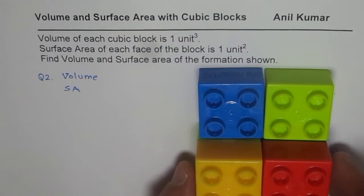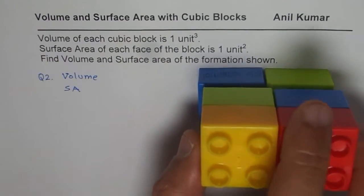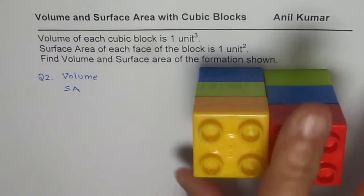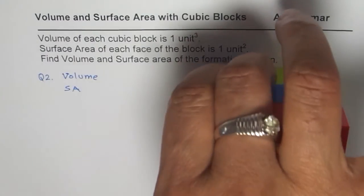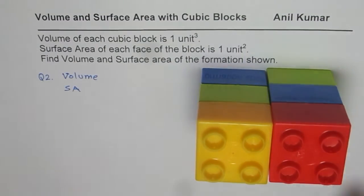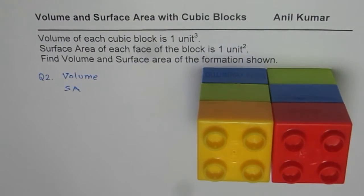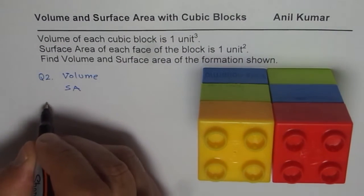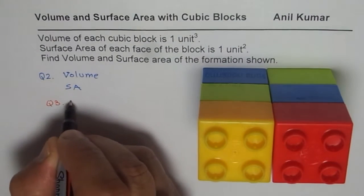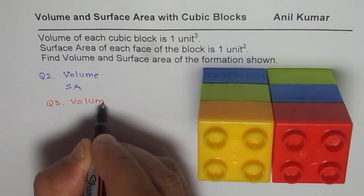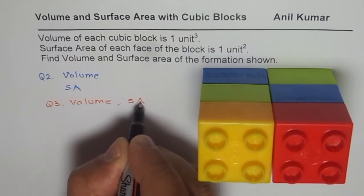Question number 3 is, I'm going to place these together, one over the other. Do you see that? So now we have two columns. We have just two columns. We have placed them one over the other. And that gives you question number 3. Again, find what is volume and what is surface area.